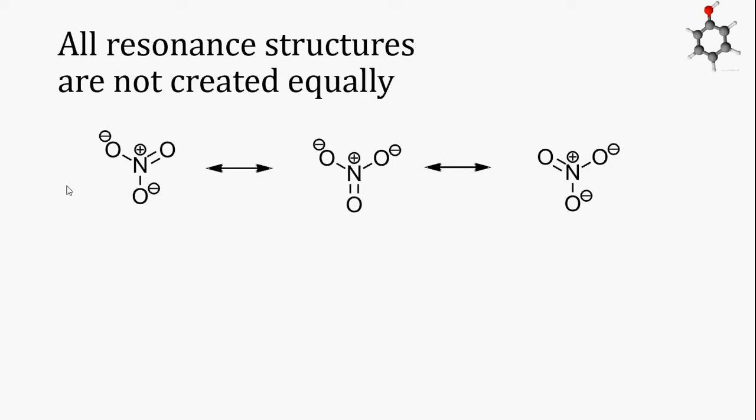In the three resonance structures for the nitrate anion, the distribution of the formal charges looks pretty similar. All three resonance structures have a positive formal charge on the nitrogen atom, and all three resonance structures have two of the three oxygen atoms with negative formal charges. While the structures are different, they are all reasonably equivalent in terms of which atoms have which types of charges.